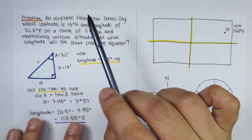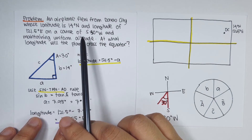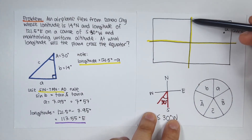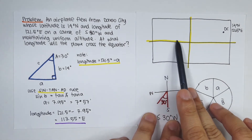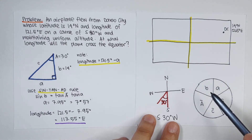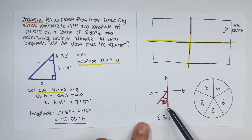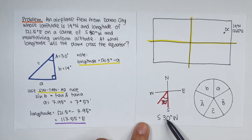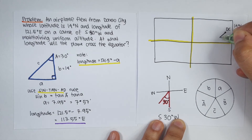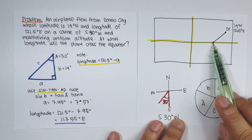An airplane flew from Davao City, latitude 14 degrees north and longitude 121.5 degrees east, on a course of 30 degrees west of south, maintaining uniform altitude. At what longitude will the plane cross the equator? Drawing a vertical line from Davao City down to the equator creates a right angle, forming a right spherical triangle with the course angle 30 degrees, the latitude side 14 degrees, and a right angle.